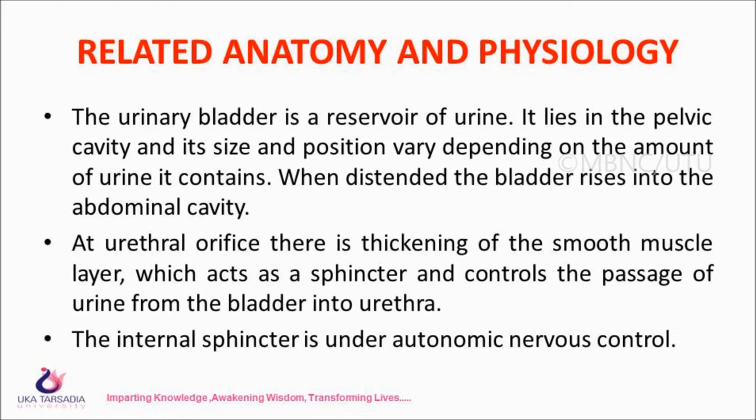Related anatomy and physiology: The urinary bladder is a reservoir of urine. It lies in the pelvic cavity and its size and position vary depending on the amount of urine it contains. When distended, the bladder rises into the abdominal cavity. At the urethral orifice, there is thickening of the smooth muscle layer which acts as a sphincter and controls the passage of urine from the bladder into the urethra. The internal sphincter is under autonomic nervous control.